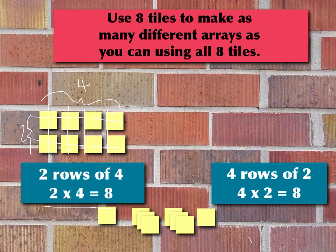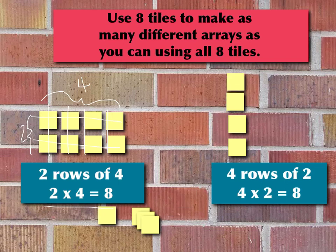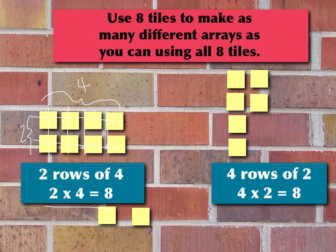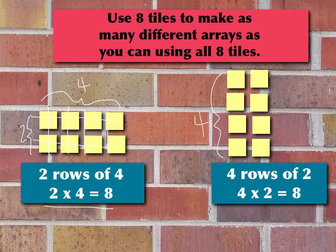Let's keep going and look at making four rows of two: one, two, three, four rows. And how many are going to be in each row? Two — one, two, one, two, one, two, and one, two. So again, we see we have one factor here which is four, because we have one, two, three, four rows. And if I switch colors so you can see the columns, we have two columns: one, two columns. So four times two is eight, just the same as two times four.